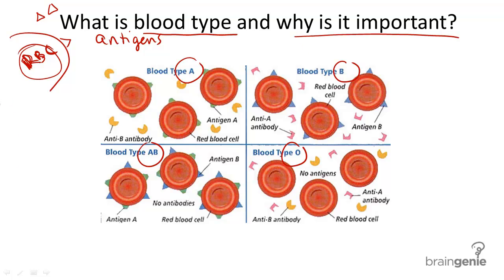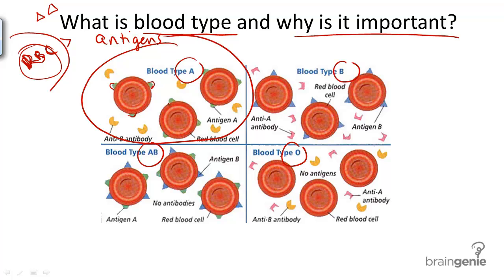So how do you explain this on a cellular level? Check out the chart in front of you — I will circle the blood types as we go through them. On the surface of your blood cells are these surface antigens. Let's go through blood type A. Your surface antigens on blood type A are labeled in green here. Blood type A contains what we call blood type A antigens, and because they contain A antigens, they will reject anything dissimilar. Therefore, they develop antibodies against anything that is not like blood type A.